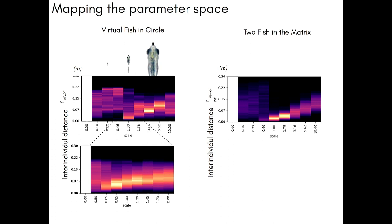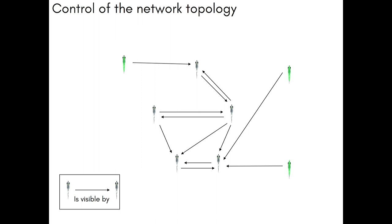I'll spend one minute on perspective — where do we go from here? One part of the problem is mapping the whole parameter space. We can modify and tune all the parameters. For example, using scale: the proper size of the fish, ten times the size, or a tiny fish — we see we don't have much interaction when the fish is too small, but when it reaches the right size and grows beyond it, the inter-individual distance changes. Putting two fish in the matrix and changing their size, we can directly modify the interaction between individuals and tune the distance at which they want to be together. Another direction is modifying the topology — one fish sees this one, which is seen by another, through virtual fish intermediaries — creating complex network topologies and studying how information is transferred inside these complex networks.